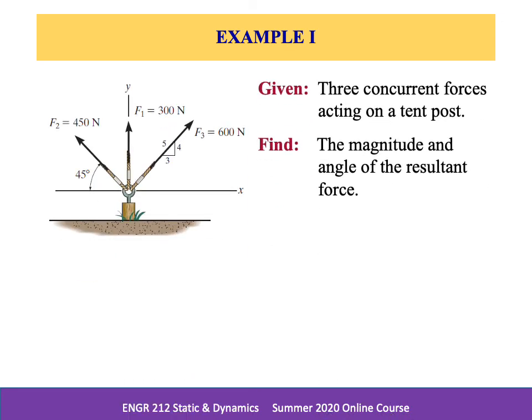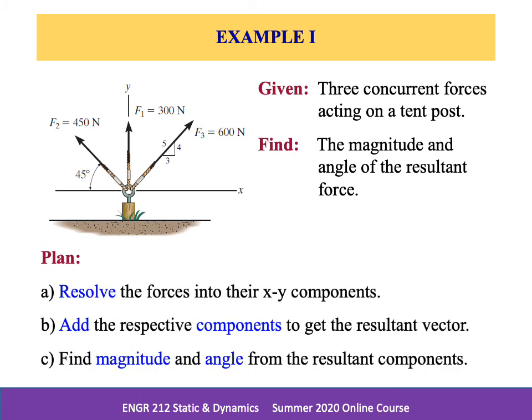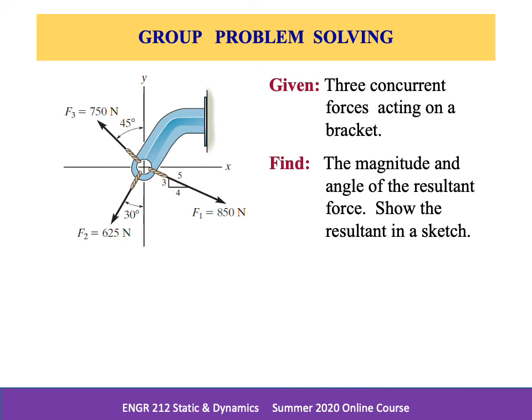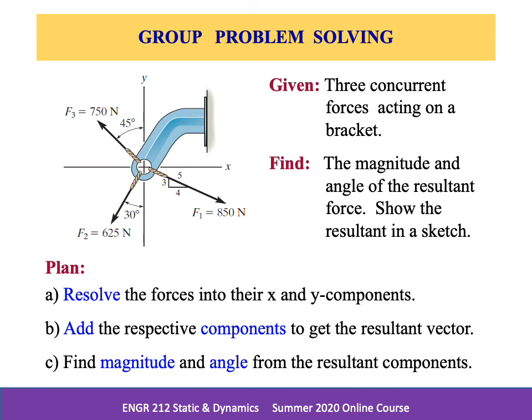There are two examples that follow this on Canvas. First, we have three concurrent forces acting on a tent post, and we'll resolve those forces into their x, y-components, add the components, and find the magnitude and angle of the resultant. Another example is given for a bent hinge and pin for a bracket with three forces acting on the bracket. We'll sketch the different forces, resolve them into their x and y-components, add those components together, and find the magnitude and angle. The plan in each of these cases is exactly the same plan for a solution. Once you get the hang of it, it's really not that tough.